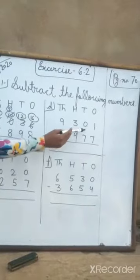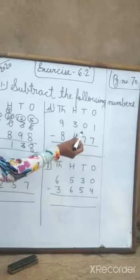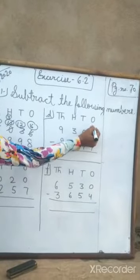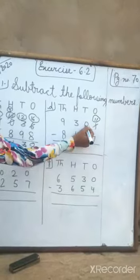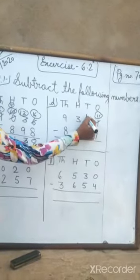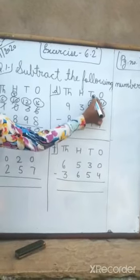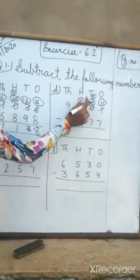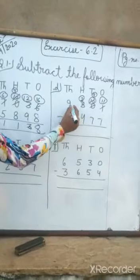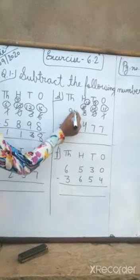Next one, 1 minus 7. We cannot do this, so we borrow - here will be 11. Here is 0, so we will borrow from here. Then we will have 9 here, 9 here, 9 here, and 2 here. 2 minus 4 will not be possible, so we borrow. It will be 12, and here will be 8.